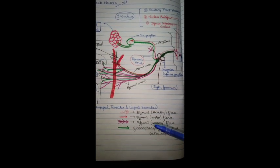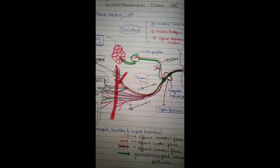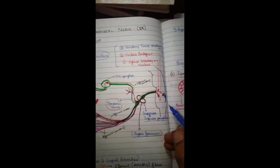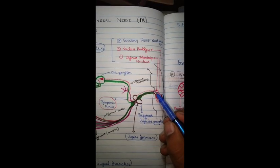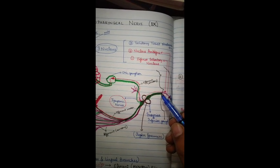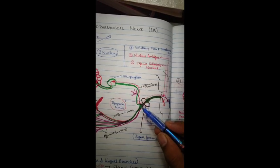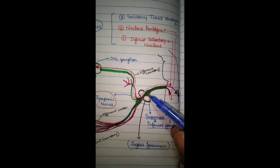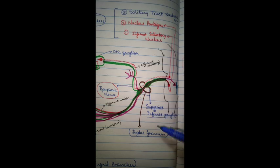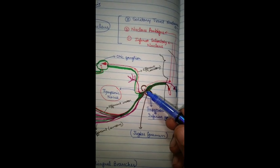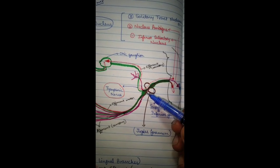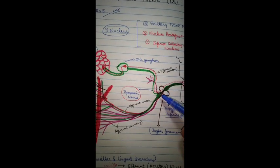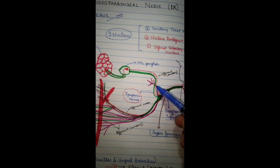So now we have learned about all three nuclei present in the medulla oblongata. These three nuclei are very important in the glossopharyngeal nerve pathway, along with the three fiber types: efferent secretory fibers, efferent motor fibers, and sensory fibers. The glossopharyngeal nerve will arise in the brain and form a superior and inferior ganglion. The superior ganglion is formed just before entering the jugular foramen, and the inferior ganglion just after exiting from it.